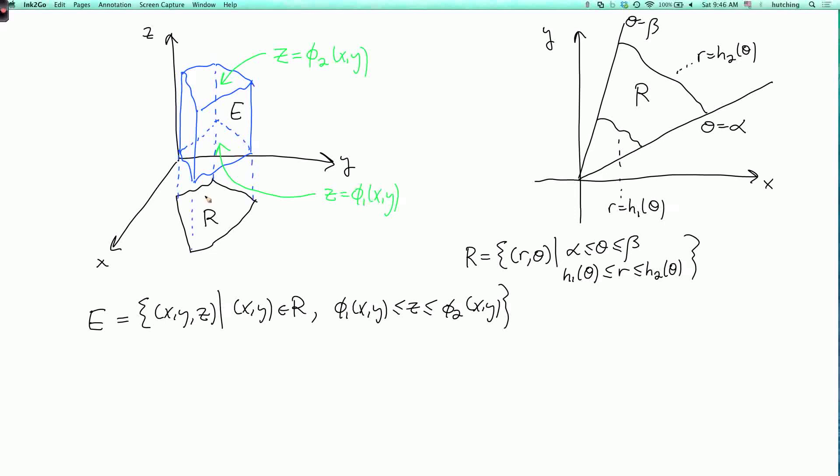And now, when the region is described this way, we can do triple integrals in polar coordinates like this. So the triple integral over E of some function f with respect to volume is the integral as theta goes from alpha to beta, and r goes from h1 of theta to h2 of theta.